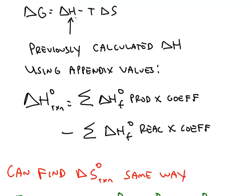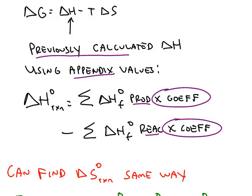For example, delta H. You already have calculated the delta H by using the values from the appendix. This is products minus reactants, and you always have to multiply the values from the appendix by their coefficients.